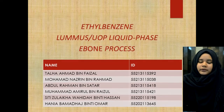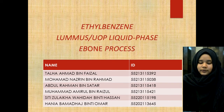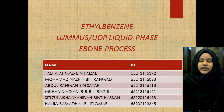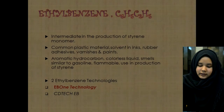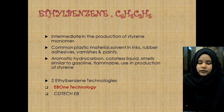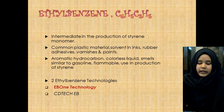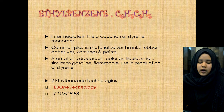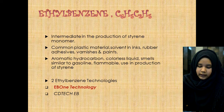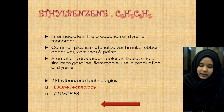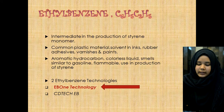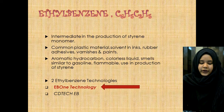Today we will be talking about the production of ethyl benzene using the EB1 process. Generally, ethyl benzene is the intermediate used in the production of styrene monomer — a common plastic material, solvent in inks, rubber, adhesives, varnishes and paints. It is an aromatic hydrocarbon, a colorless liquid that smells similar to gasoline. It is flammable and used in the production of styrene.